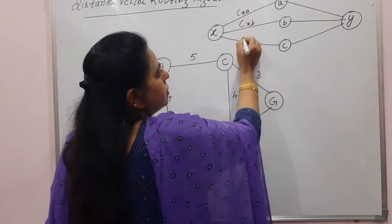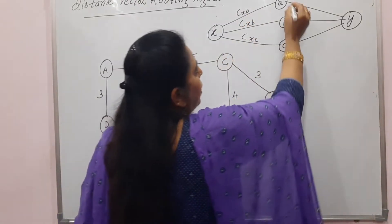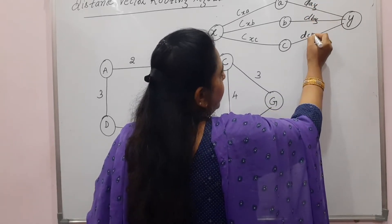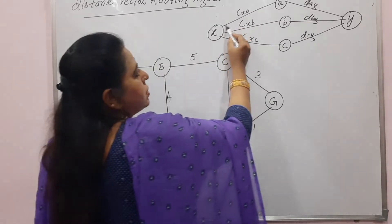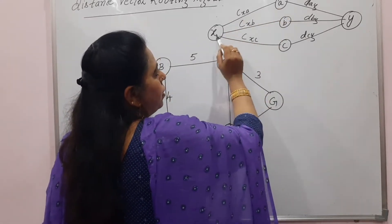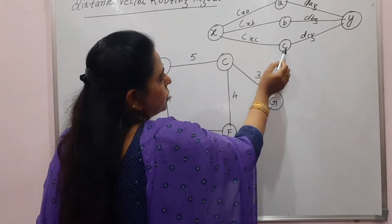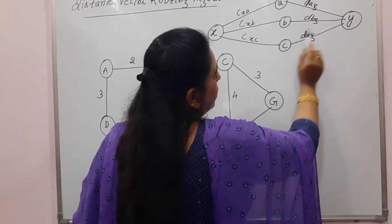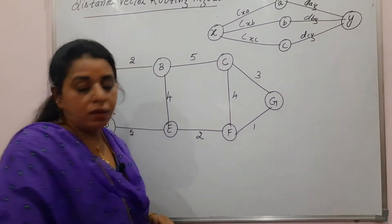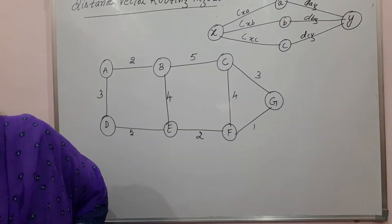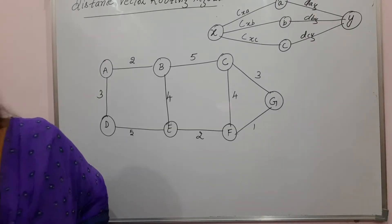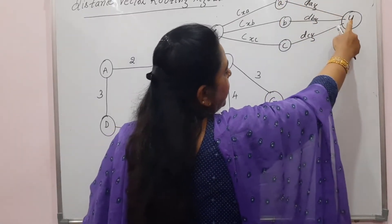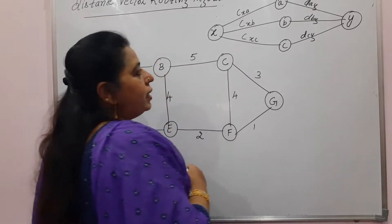The cost between these two is mentioned as CXA, CXB, CXC, and the distance between these is DAY, DBY, and DCY. This is the cost between the source node and the intermediate node, and this is the least cost between the intermediate node and the destination. That is why the least cost from the intermediate node to destination node Y is represented with a bold line.